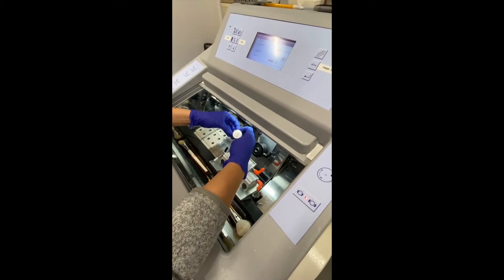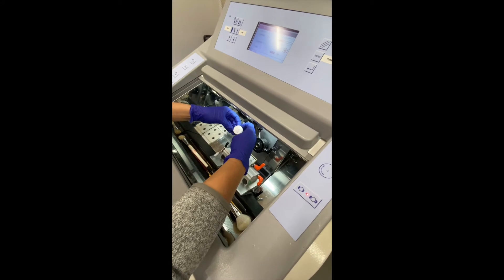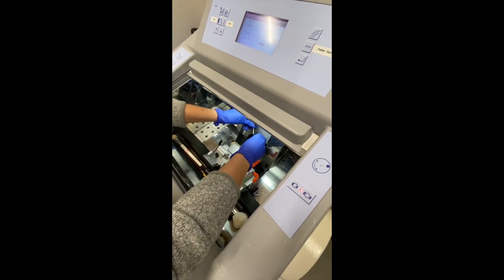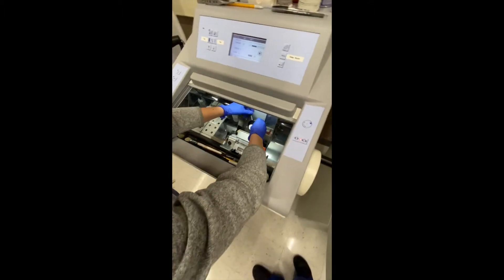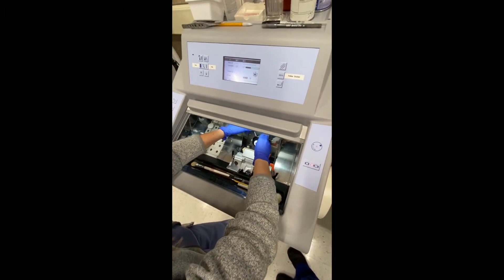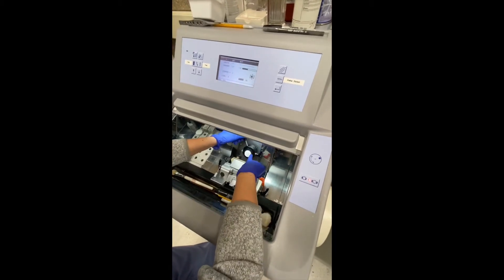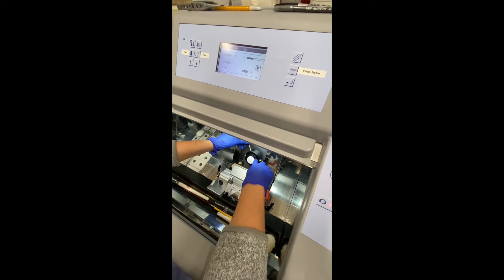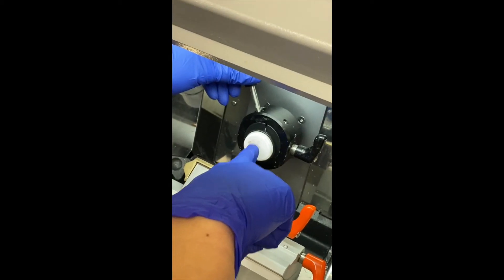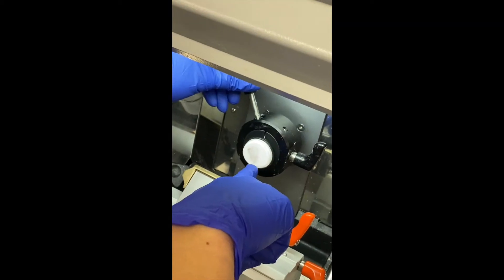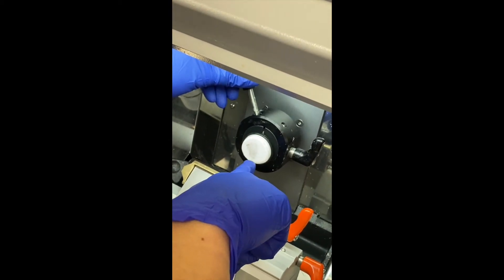After the specimen has been frozen onto the chuck, you're going to mount the chuck onto the specimen head. When mounting your chuck onto the specimen head, you always want to orient your chuck so that you're cutting from either the smallest surface area to the largest, or you're cutting from soft tissue to firm tissue.